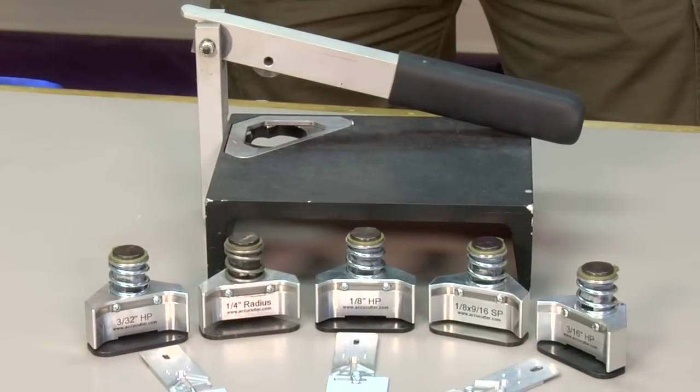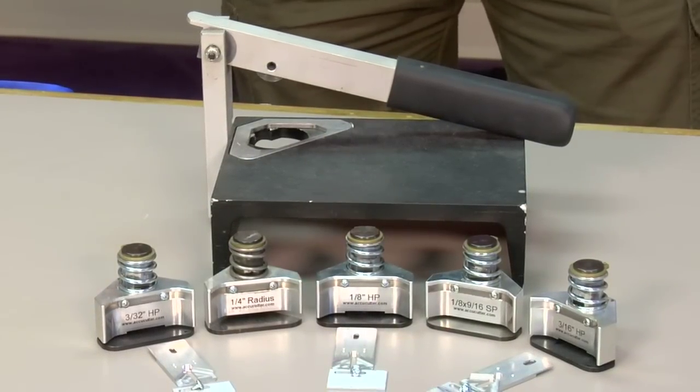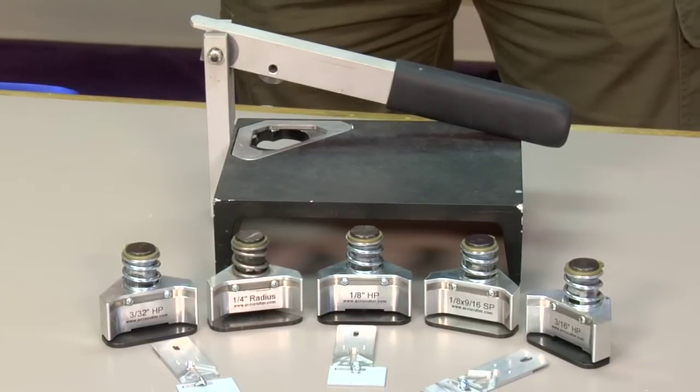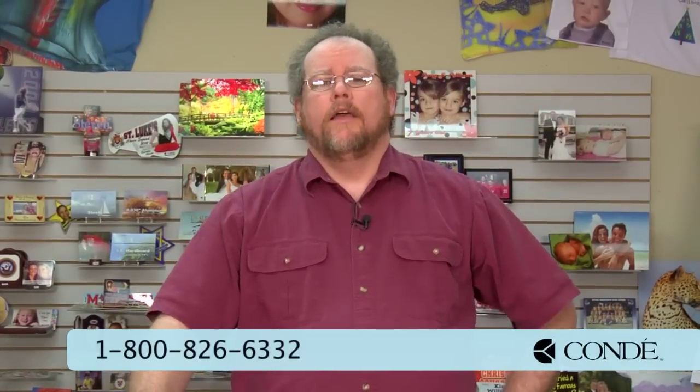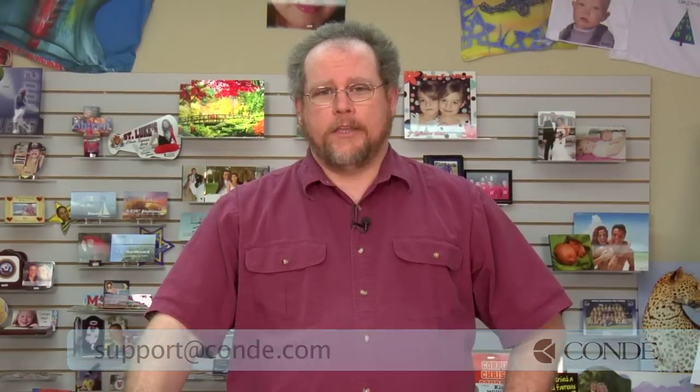As I stated before the AccuCutter is made for a wide variety of metals that'll work on tin, aluminum, brass, basically any thin sheet metal. You can use it to make the corners or to make the holes. If you have any questions about this or any other products we have at Condi, give us a call at 1-800-826-6332 or even send us an email to support at condi.com. Thank you.